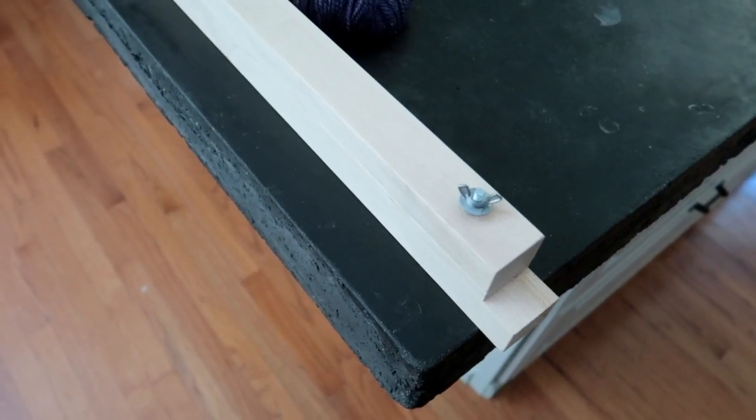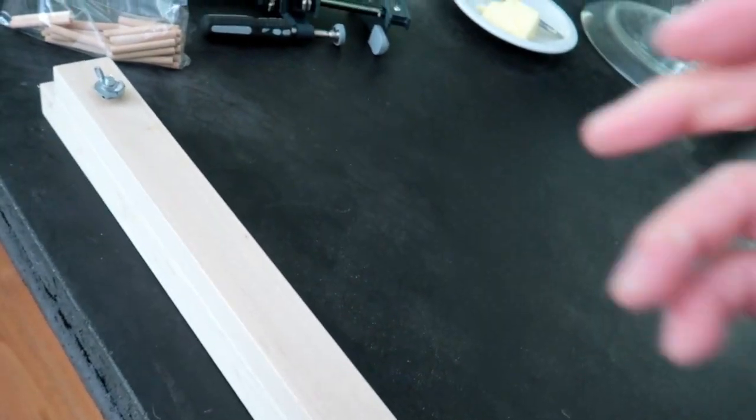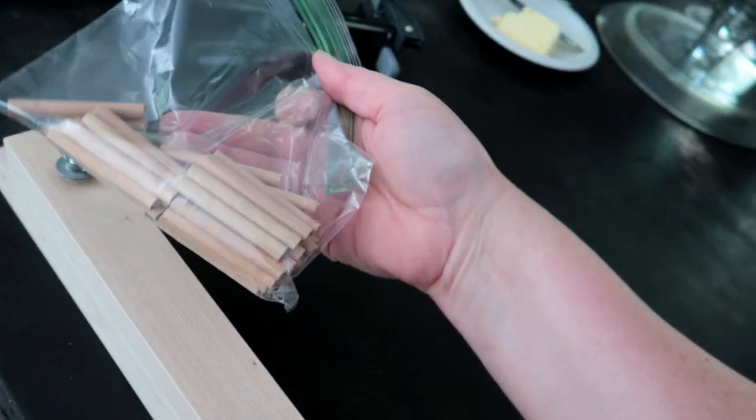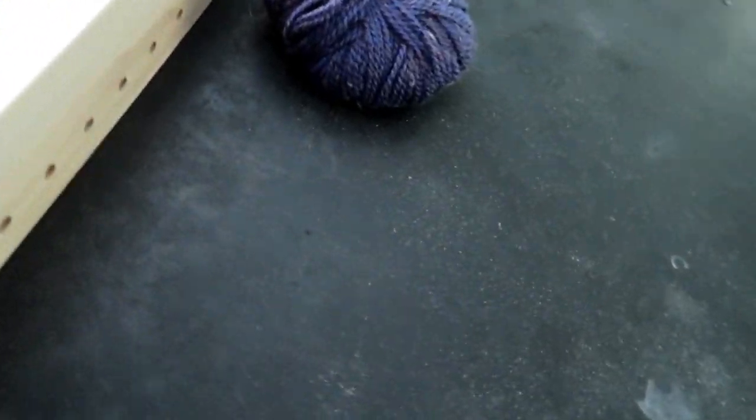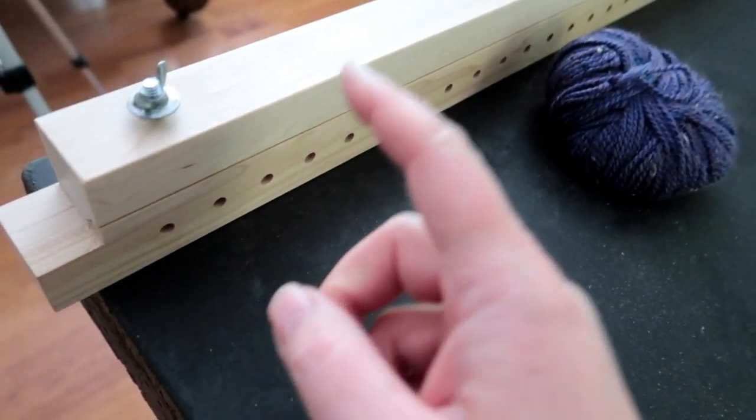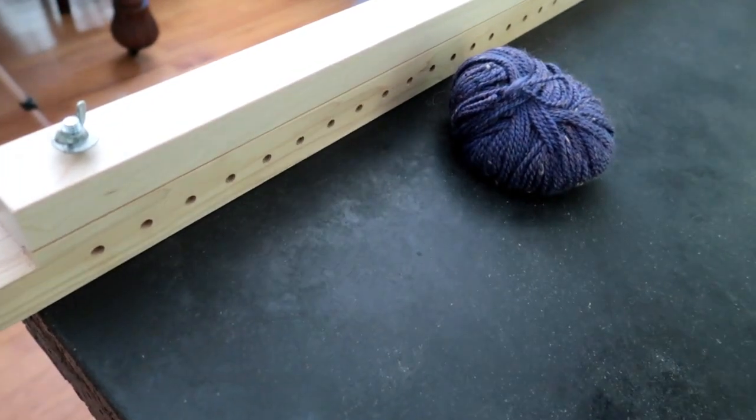I want to make sure you all have a visual to help you learn how to use these bars. This is what your bar will look like straight out of the box. The bolts and wing nuts will be on it, and you'll have your bag of pegs as well.